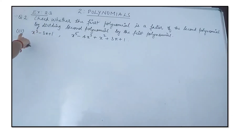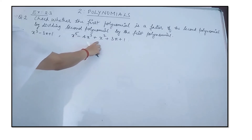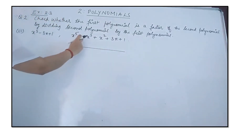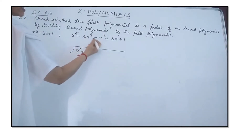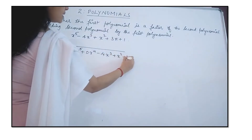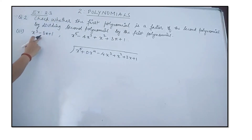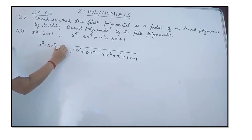Now we consider the third subdivision. The first polynomial is x³ − 3x + 1, and the second polynomial is x⁵ − 4x³ + x² + 3x + 1. The second polynomial is written as the dividend inside. Since the x⁴ term is missing, we supplement it, giving x⁵ + 0x⁴ − 4x³ + x² + 3x + 1 in descending order. The divisor x³ − 3x + 1 is written as x³ + 0x² − 3x + 1.